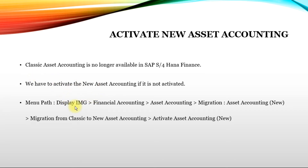Then go to the Display IMG window. From there, select Financial Accounting. In Financial Accounting, we have Asset Accounting, and in Asset Accounting there is the option Migration Asset Accounting New. We need to click the first option, which is Migration from Classic to New Asset Accounting, and then select the third option, which is Activate Asset Accounting New.